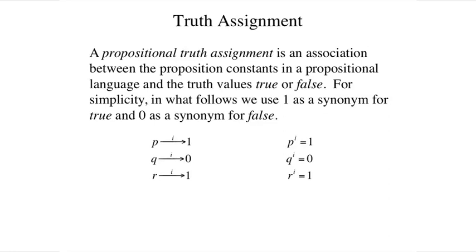The assignment shown here is an example for the case of a logical language with just three proposition constants, namely p, q, and r. p is assigned the value 1 for true, q is assigned the value 0 for false, and r is assigned the value 1 again for true.